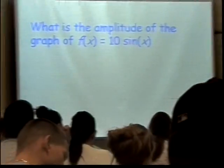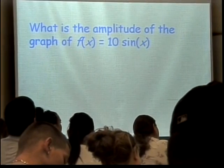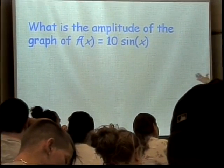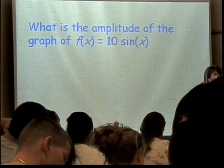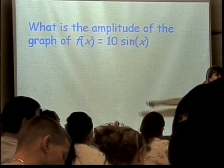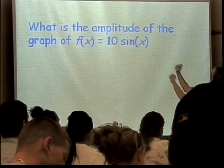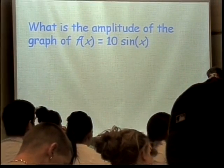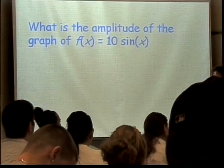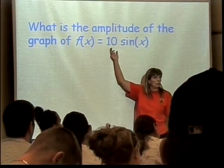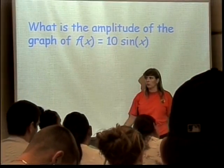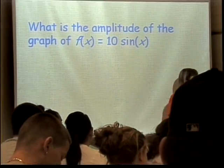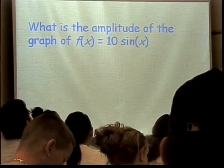Now, here's a basic equation: F of X equals 10 times the sine of X. What is the amplitude if I were to graph this function? 10. I just take this number, take its absolute value, and I have an answer. That's easy enough because I can just read them off.